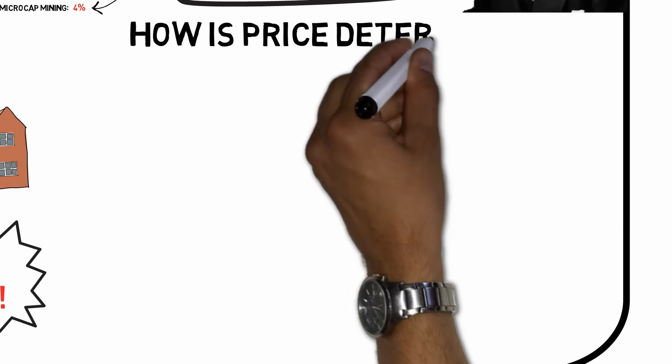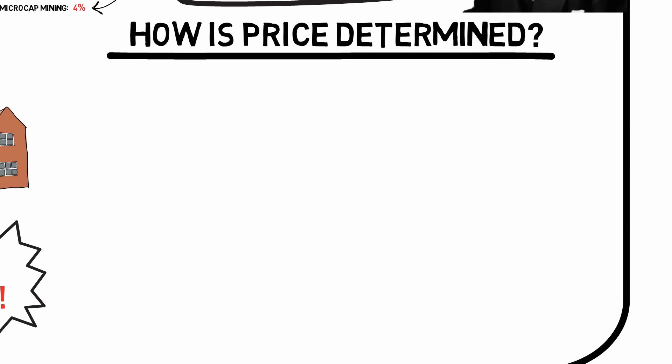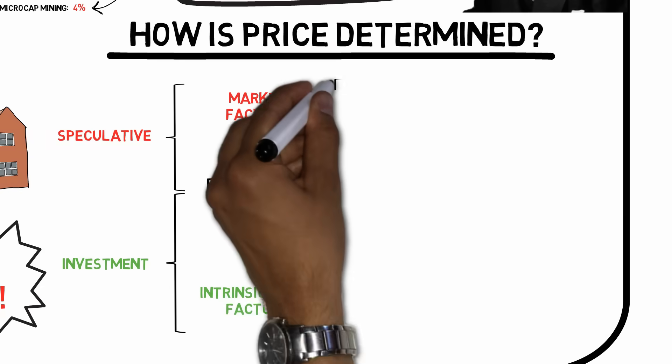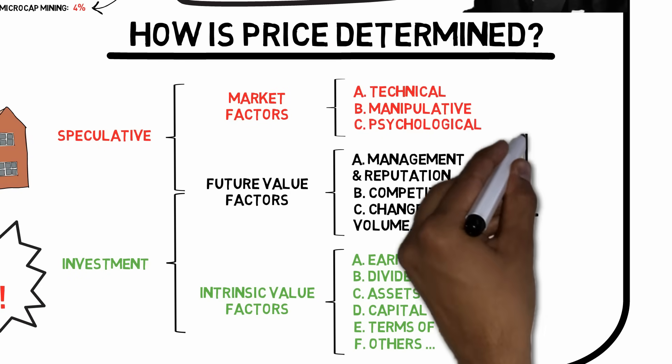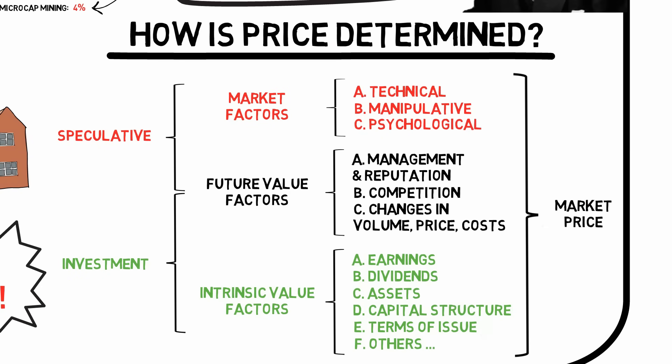Benjamin Graham provides an excellent chart of how the price of a security is determined, and points out which components that may be regarded as investment, and which that are speculative. In the case of Netflix, a great portion of the current market cap of almost $170 billion is made up of the market factors, which are 100% speculative, and the future value factors, which are part speculative and part investment. Only a small portion is made up of true investment value, which Benjamin Graham refers to as the intrinsic value factors.